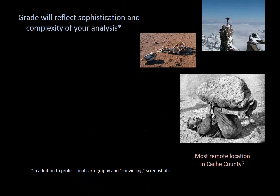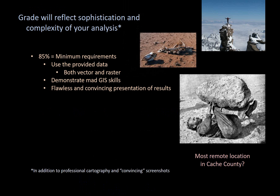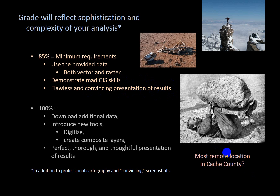Grading: you will earn a solid 85% if you do what we asked — those minimum requirements of using vector and raster data, great multi-stepped processing, and a great presentation of your results that is professional, thoughtful, and deliberate. You can bump that up to 100% by downloading additional data beyond what we gave you, introducing a new tool you taught yourself, adding a digitizing component, or creating composite layers — for example, reclassifying a raster, exporting and converting results to polygons, then using those polygons to erase or clip something else you've buffered. Always provide a professional, easy-to-read, careful presentation of your results.